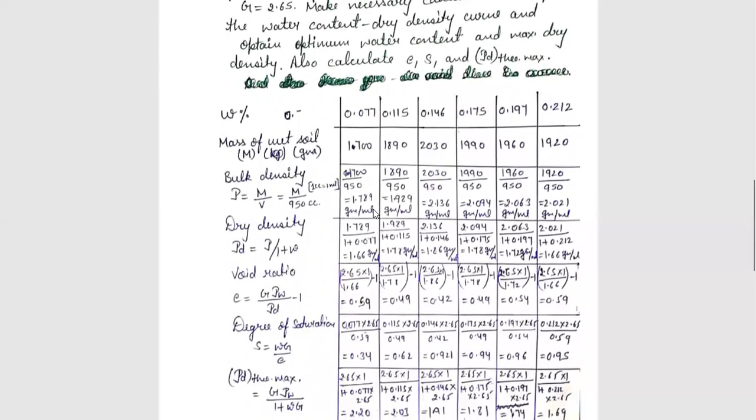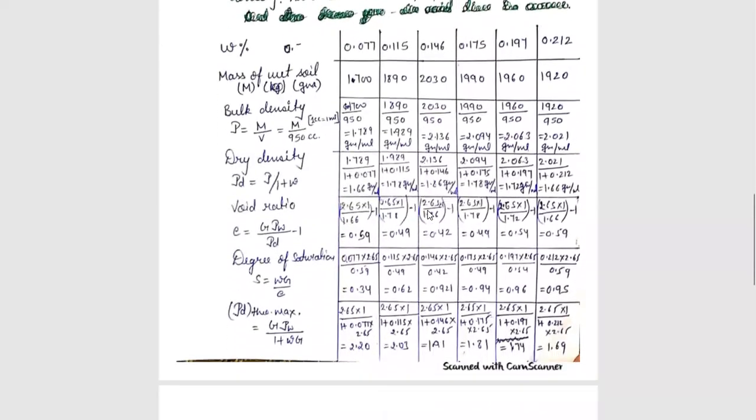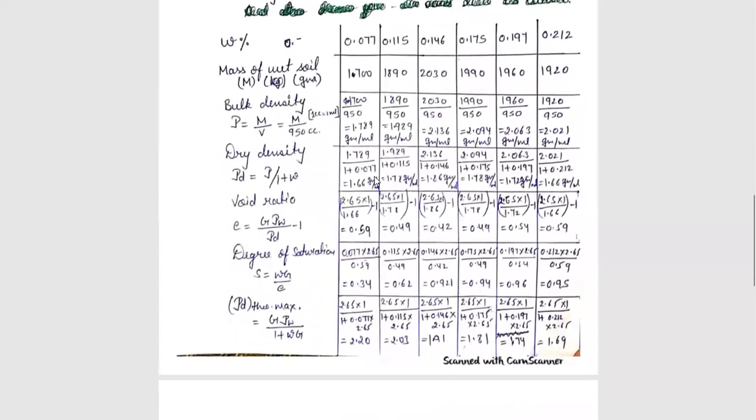Rho d equals rho upon 1 plus w. We have water content. We have rho in each water content. What will we do in this formula? We will find out dry density. What will be the unit of dry density? The unit will be gram per ml.